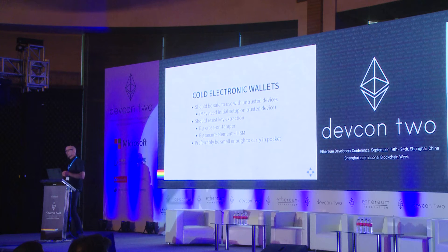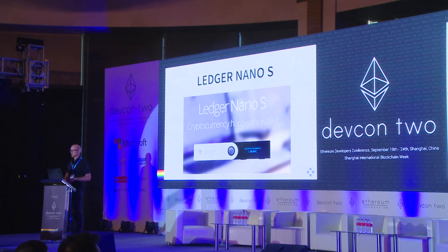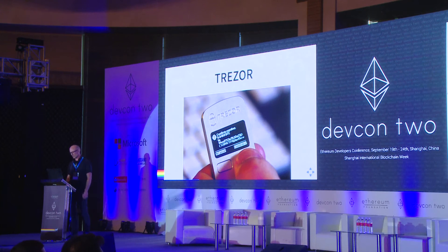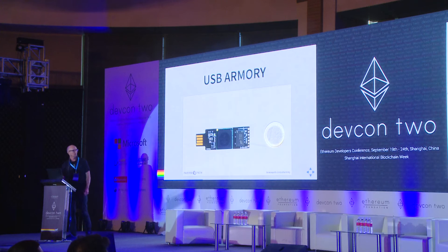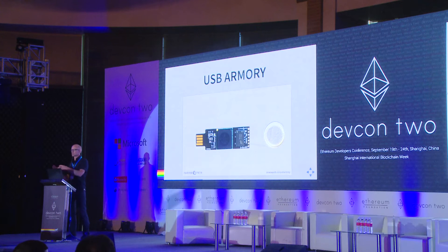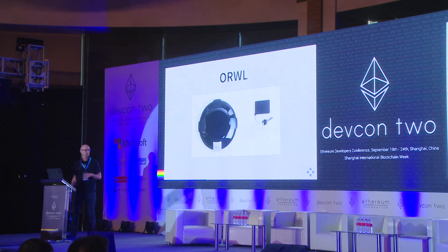For tech nomads traveling the world, it's good if it's small enough to carry in your pocket so you don't have to leave it in the hotel room. Some of these products are coming up: the Ledger Nano OS has been released. Trezor is a Bitcoin wallet and they have announced Ethereum integration. USB Armor is a generic secure computer — when you plug it in, it spins up a new network interface so you can SSH into it. Orwell is an open-source attempt at a completely open secure computer.